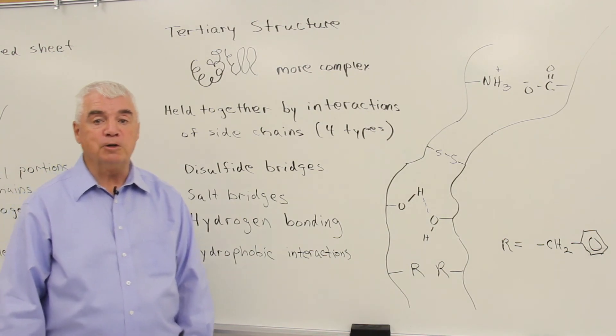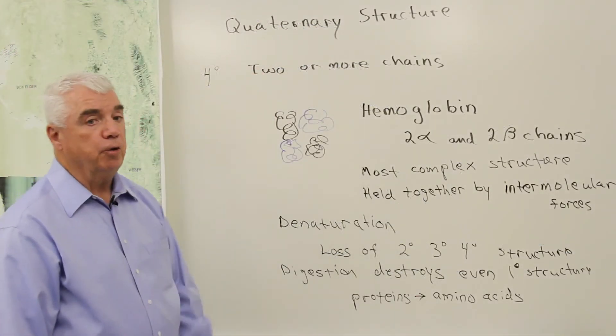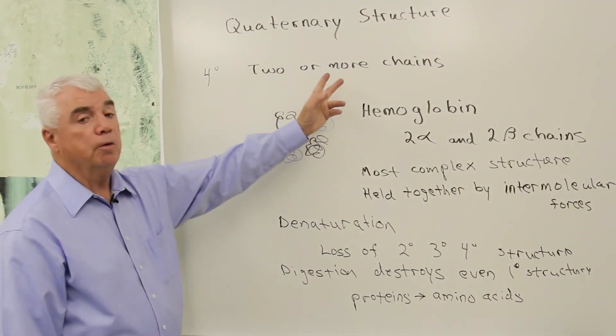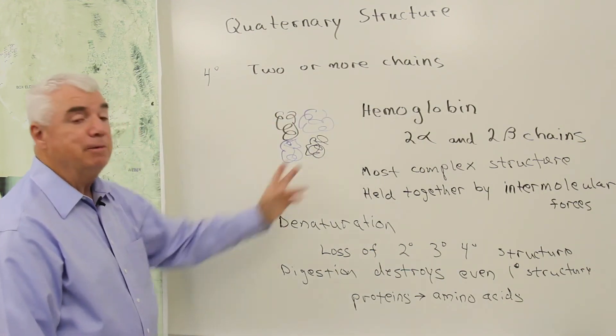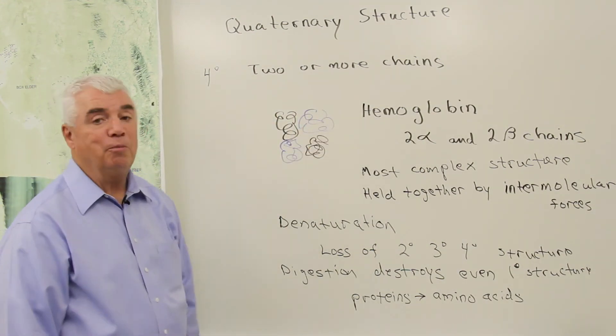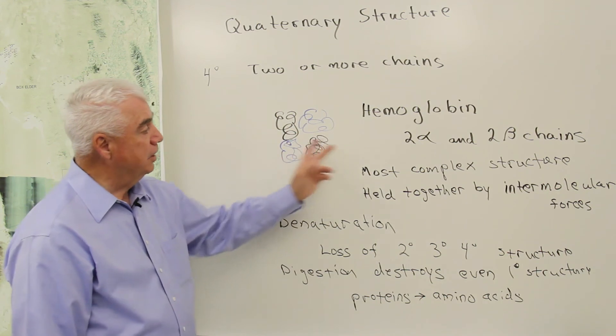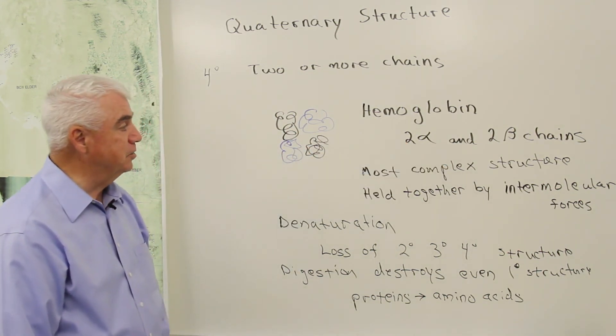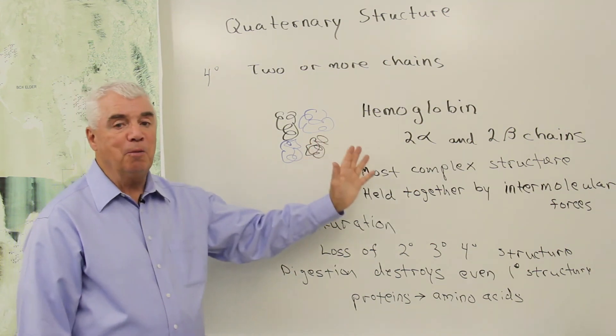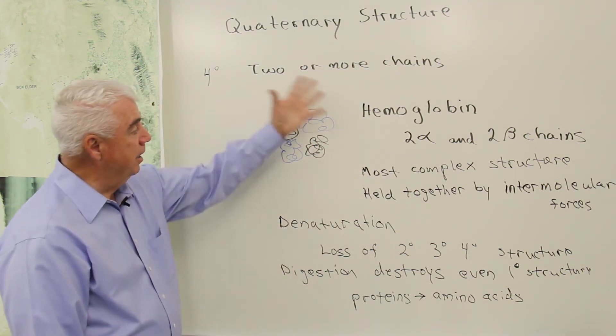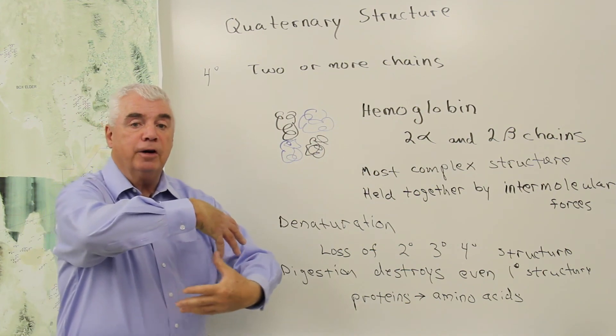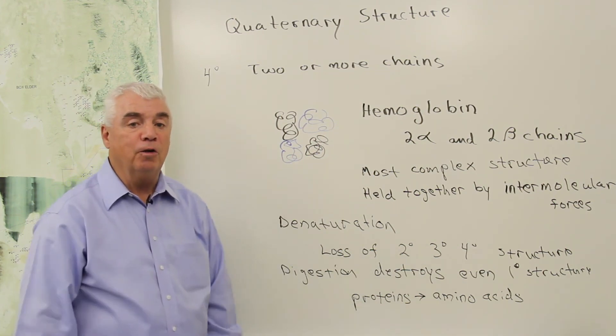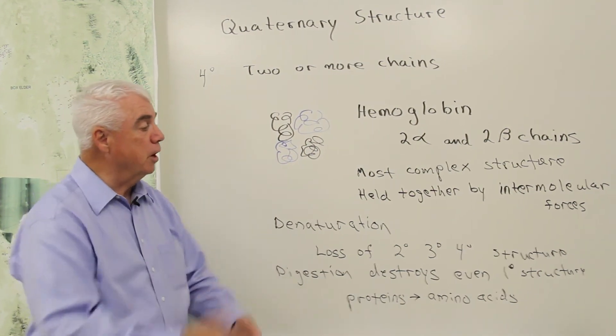Let's look at quaternary forces. Quaternary structure involves two or more chains. Hemoglobin is an example. Hemoglobin has four chains: two identical alpha chains and two identical beta chains. And this is the most complex structure of all. And these chains are held together in a specific three-dimensional form, a globular structure,